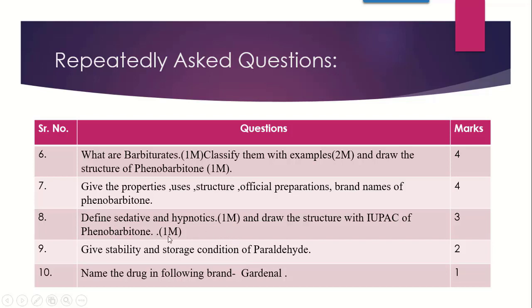Question 8 again asks the definition of Sedative and Hypnotic, and the IUP name of Phenobarbitone. So here only 2 drugs are important: the drug containing a piperidine ring — that is glutethimide — and Phenobarbitone. Question 9: give the stability and storage conditions of Paraldehyde. Just as with general anesthetics and some vitamins, stability and storage conditions are important. For Sedative Hypnotics, Paraldehyde is really very important from the stability and storage point of view, asked for 2 marks. The last question asks: name the drug under the brand name Gardinal.